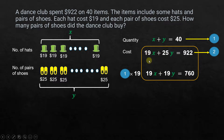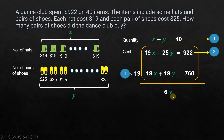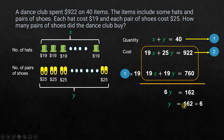Now I subtract this new equation from Equation 2. The X terms cancel: 19X minus 19X equals 0. What remains is 25Y minus 19Y, which is 6Y, and that equals 922 minus 760, which is 162. So 6Y = 162.